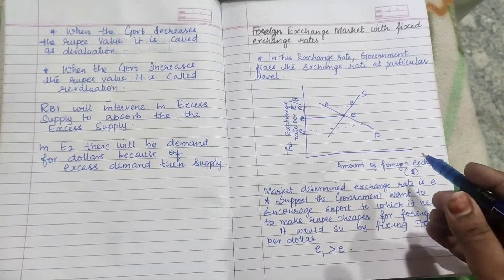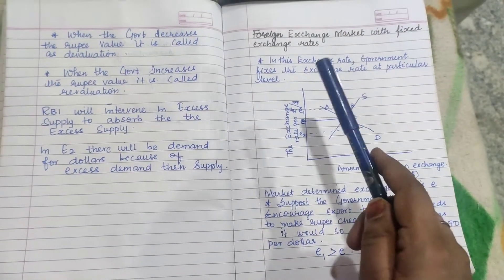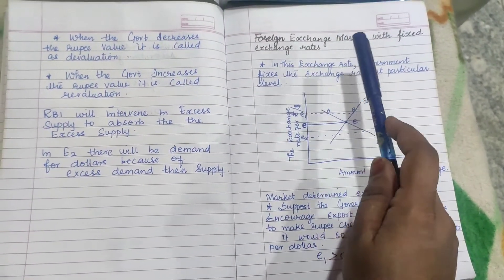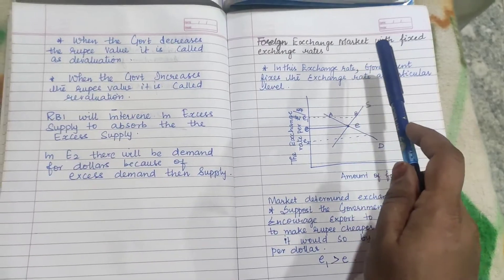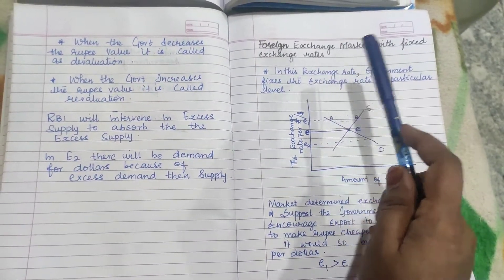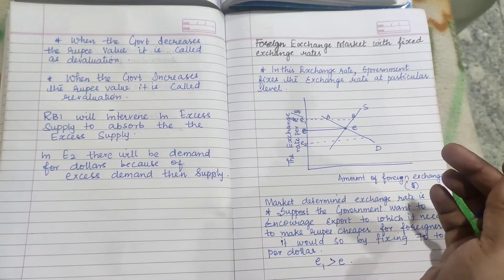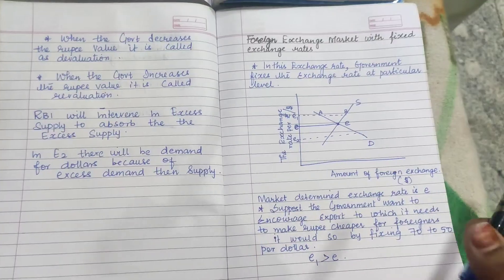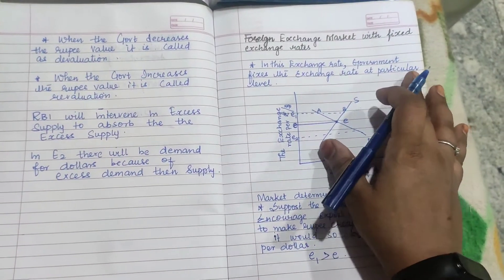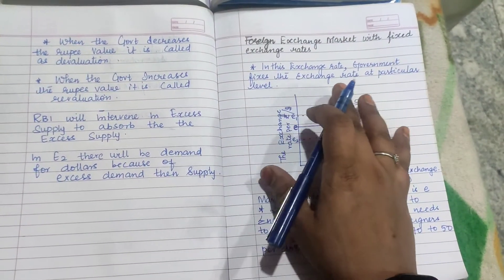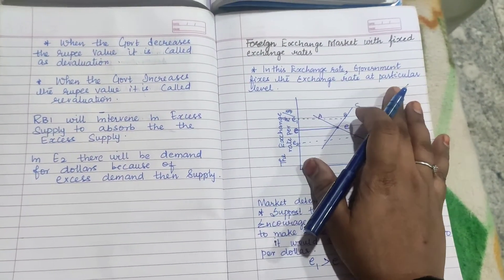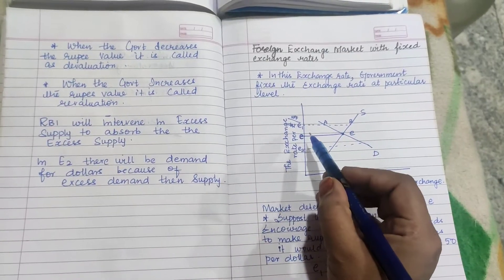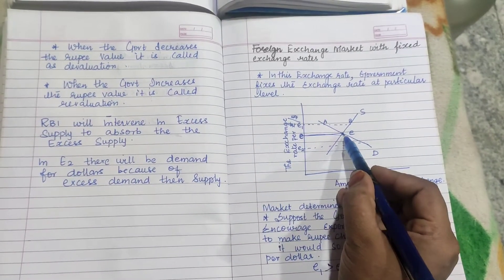The question is: briefly explain the foreign exchange market with a fixed exchange rate with the help of a diagram. In this system, the government fixes the exchange rate at a particular level. The normal market-determined exchange rate is E.